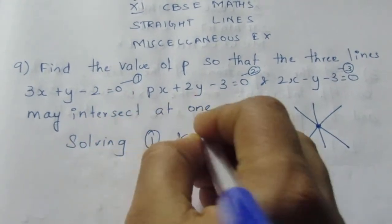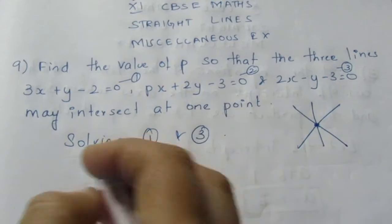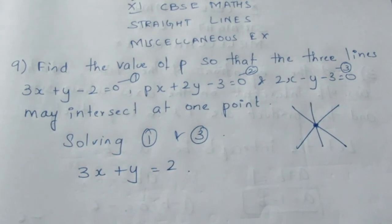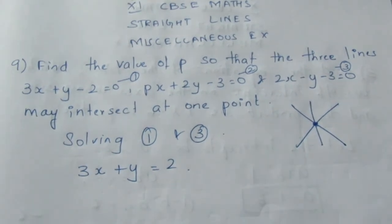Because here we have only x and y, so we can easily solve it. So 3x + y = 2. I am taking 2 to that side, it becomes positive, so plus 2.